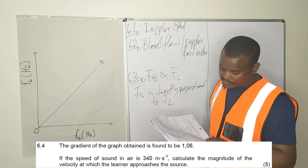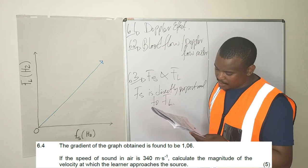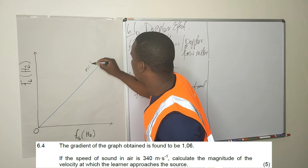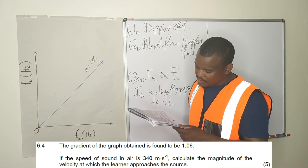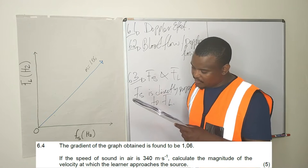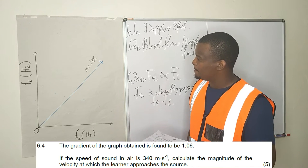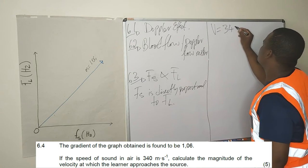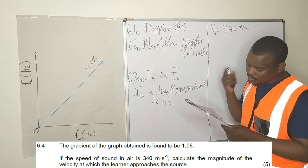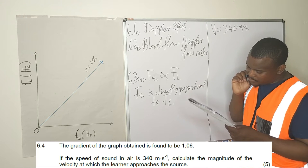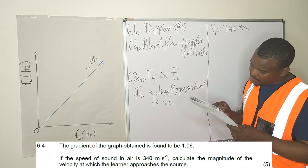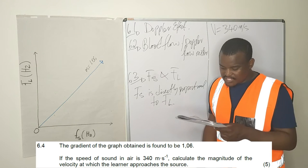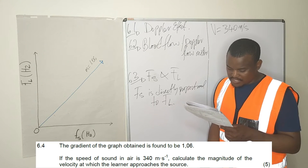They are saying the gradient of the graph obtained is found to be 1.06. So the slope of this line is 1.06. If the speed of sound in air is 340 meters per second, calculate the velocity at which the learner approaches the source. You are given that the gradient is 1.06 and the speed of sound in air is 340 meters per second.